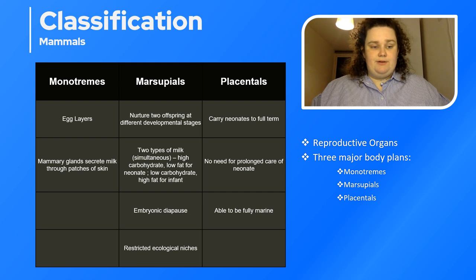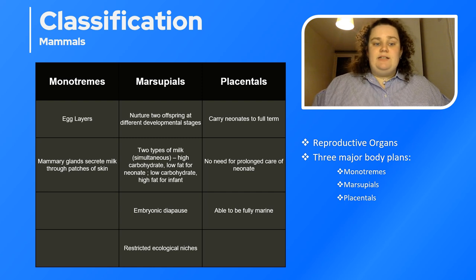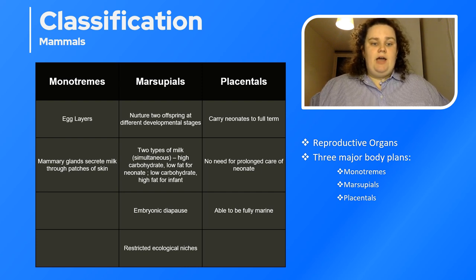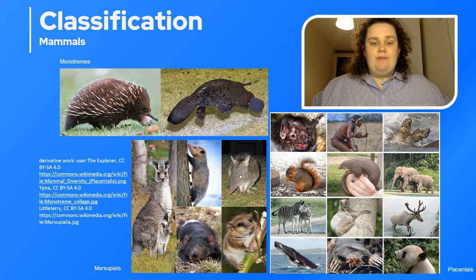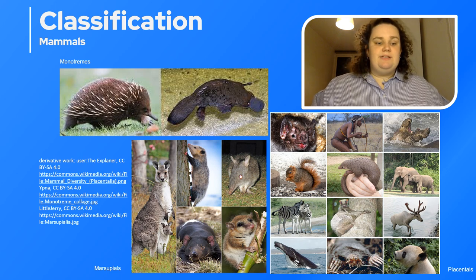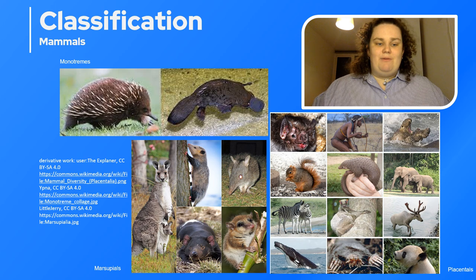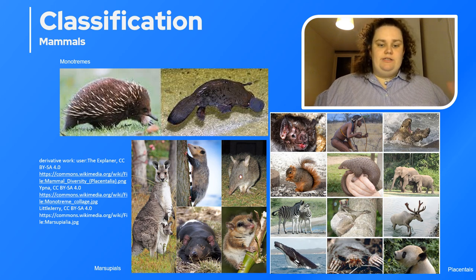Marsupials also have restricted ecological niches, meaning that way of reproducing is better suited to their environments. Placentals — which include us — carry neonates to full term with no need for prolonged external care of the neonate, and this has allowed placental mammals to become fully marine. Examples of the three mammal groups still alive today: monotremes include echidnas and platypuses; marsupials include kangaroos, wallabies, and opossums; and placentals include bats, squirrels, sea lions, elephants, zebras, whales, bears, dogs, cats — basically every other mammal.